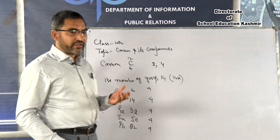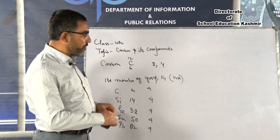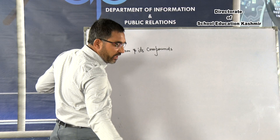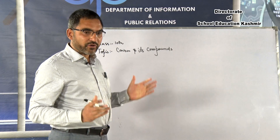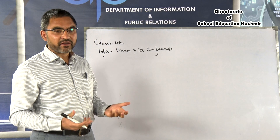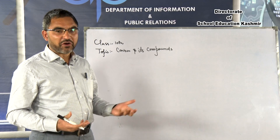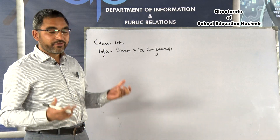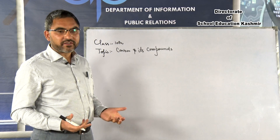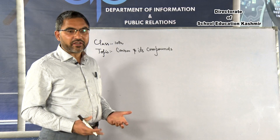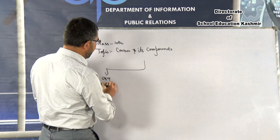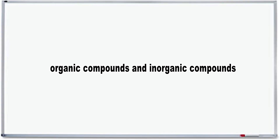In the universe, Carbon forms a lot of compounds — both organic compounds as well as inorganic compounds. In nature, Carbon is present in everything. Inorganic compounds include Carbon dioxide, Carbon monoxide, and Carbonates like washing soda and baking soda. Organic compounds include fats, proteins, carbohydrates, nucleic acids, RNA, DNA, and genetic material.